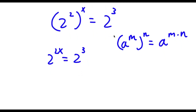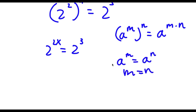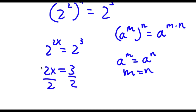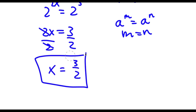Now if I have something in the form a to the power of m is equal to a to the power of n, this means that m is equal to n. So in this case 2x is equal to 3. To solve this I'm going to divide both sides by 2 — these two cancel out and I am left with x is equal to 3 over 2. So this is my answer.